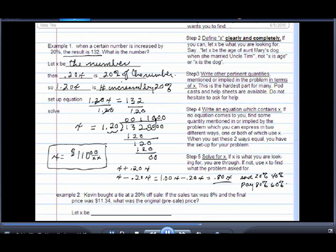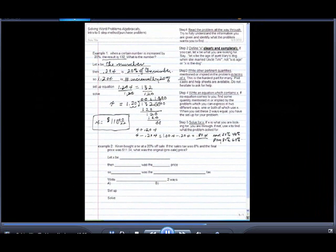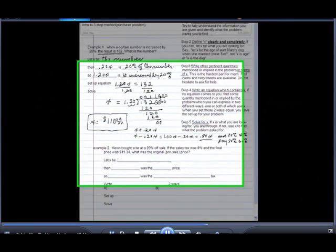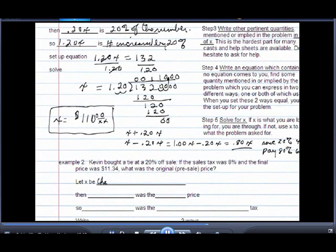So with that in mind, let's take a look at example two. It says Kevin bought a tie at a 20% off sale. If the sales tax was 8% and the final price was $11.34, what was the original or the pre-sale price of the tie? Well, in this case, the problem asks us to find the original price of the tie. So I'll say let x be the original price of the tie.